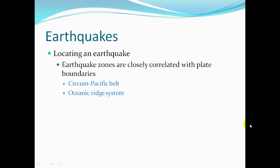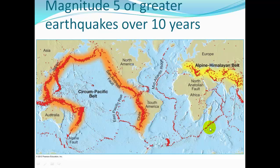Earthquake zones are closely correlated with plate boundaries. Along the circum-Pacific belt, or Ring of Fire, we find many earthquakes, as well as along the oceanic ridge system. Most volcanic activity also occurs in this area. Along the Alpine-Himalayan belt, there is also a lot of earthquake activity.